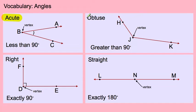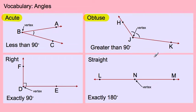The next angle we're going to review is obtuse. An obtuse angle is anything greater than 90 degrees. Again, we're measuring the inside part of the angle, and that has to be greater than 90. The place where the two rays come out is called the vertex.